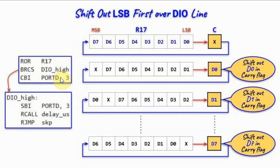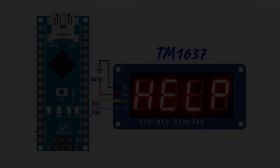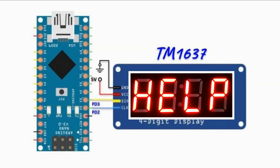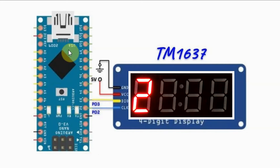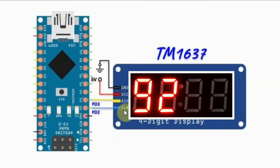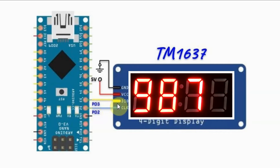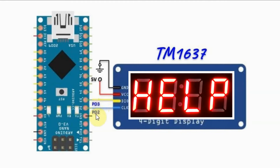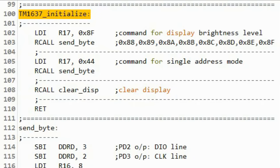Here the TM1637 is interfaced with the Arduino, where the clock line is connected to pin PD2 and the DIO line is connected to pin PD3 of the microcontroller. Looking at the assembly code, we first need to initialize the TM1637.